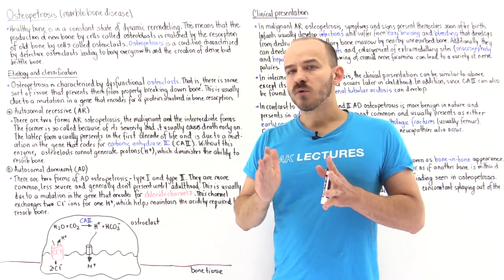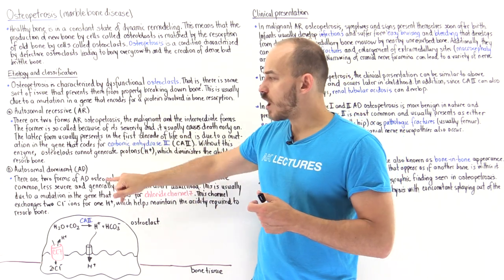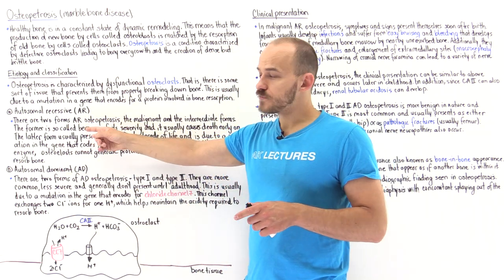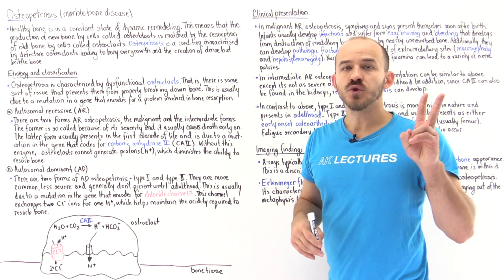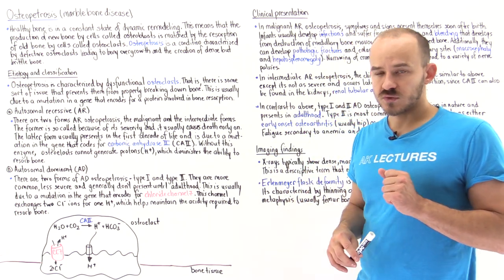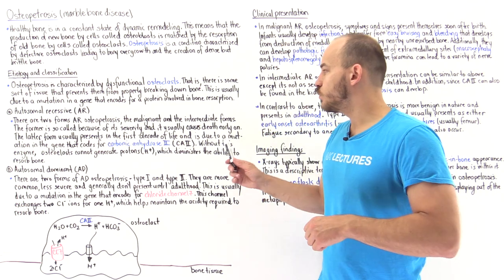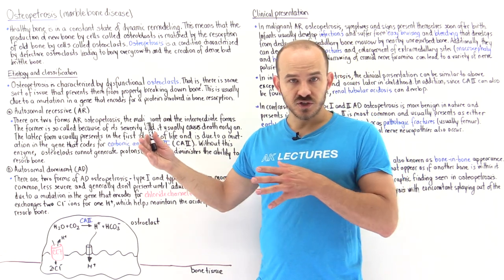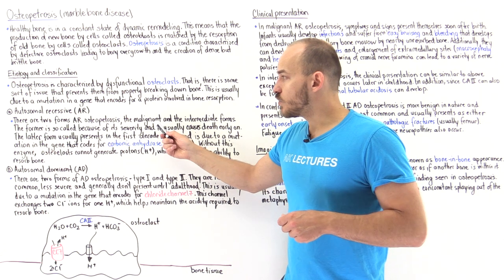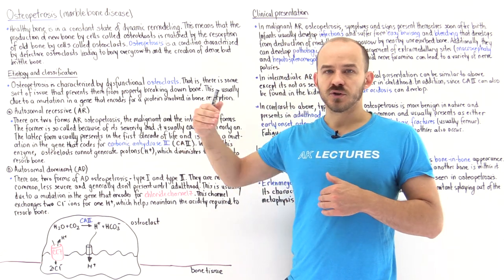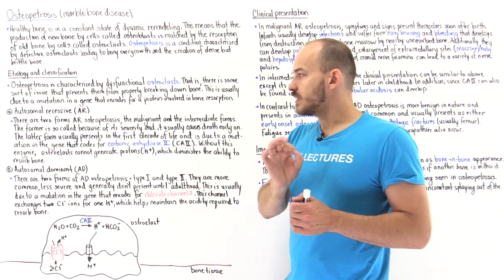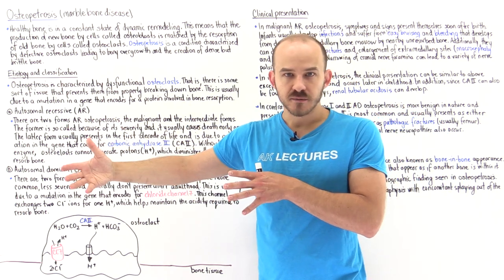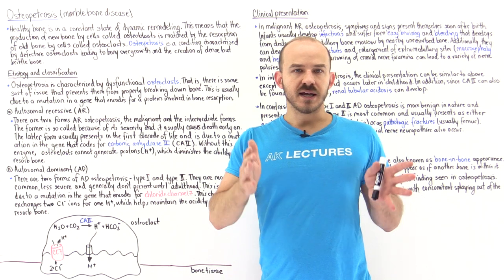Autosomal recessive is the much more severe form, whereas autosomal dominant is the less severe form — and luckily autosomal dominant is more common. Within autosomal recessive osteopetrosis, we have the malignant form and the intermediate form. Malignant is so called not because of its association with cancer, but because of its severity. The malignant form is very severe and presents early on, soon after birth, whereas the intermediate form presents within the first decade of life.